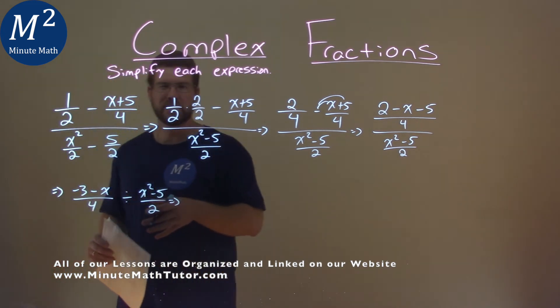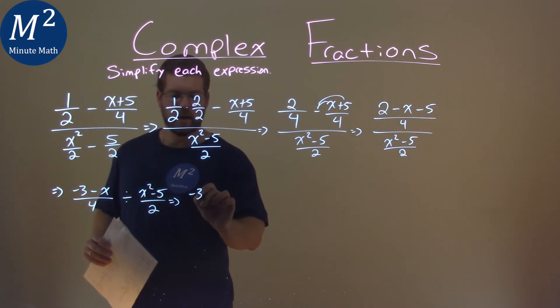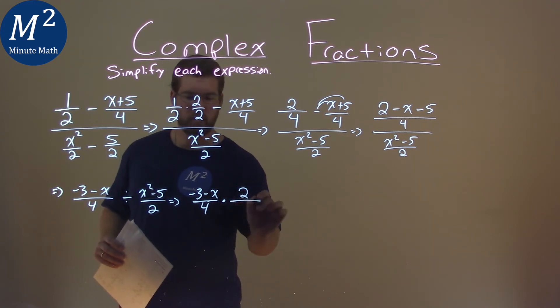When we divide a fraction, it's the same thing as multiplying, but we flip the fraction here. So we have negative 3 minus x over 4. Multiply, let's flip this around, 2 over x squared minus 5.